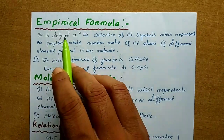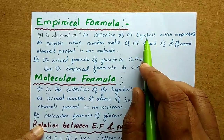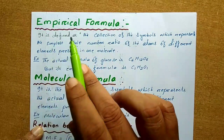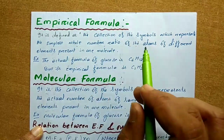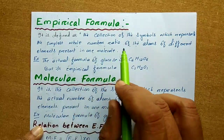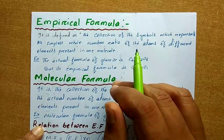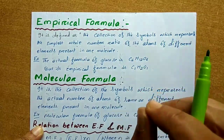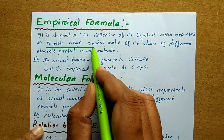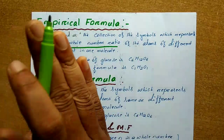Empirical formula is defined as the collection of symbols which represents the simplest whole number ratio of the atoms of the different elements present in one molecule. That means empirical formula is the simplest whole number ratio of the original compound.